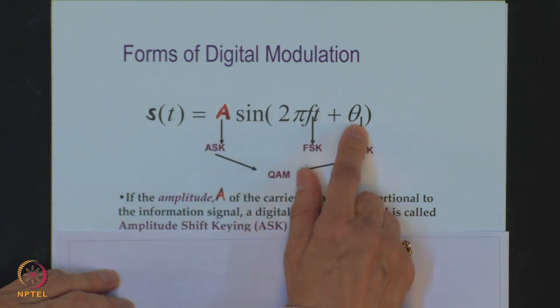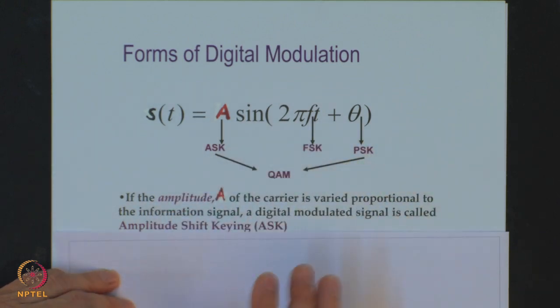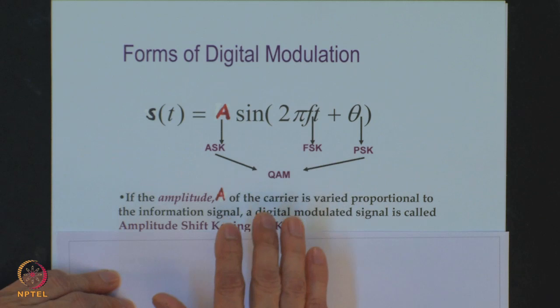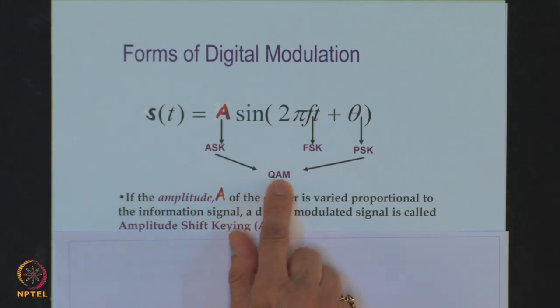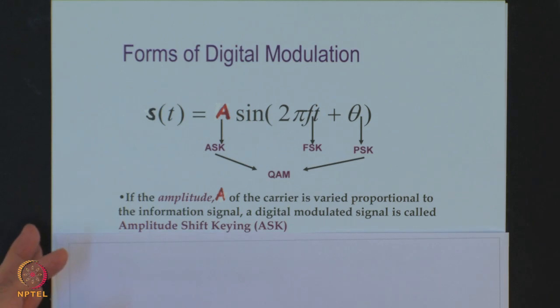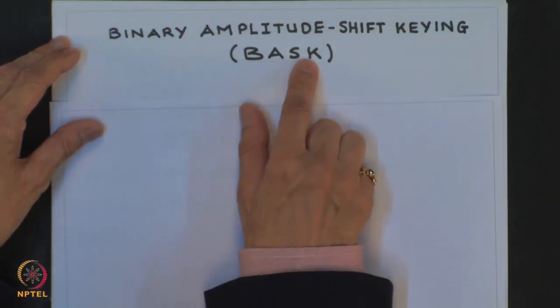If both the amplitude and the phase theta of the carrier are varied proportional to the information or message signal, a digital modulated signal is generated called quadrature amplitude modulation (QAM). The first type of digital modulation to be practically applied was amplitude shift keying. We will start with our study on binary amplitude shift keying, in short BASK.